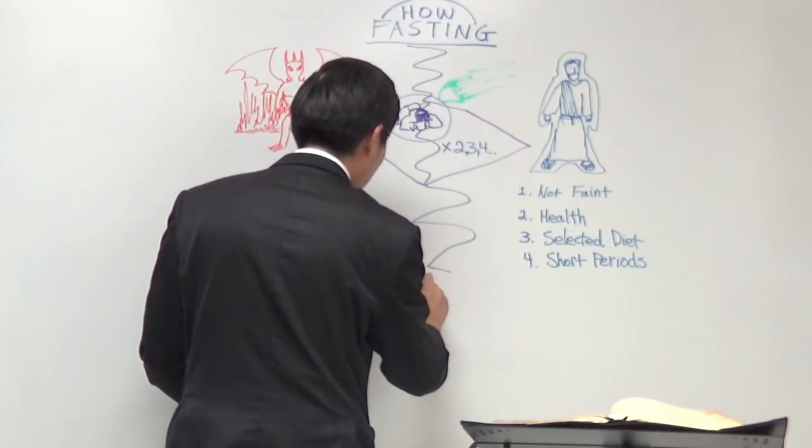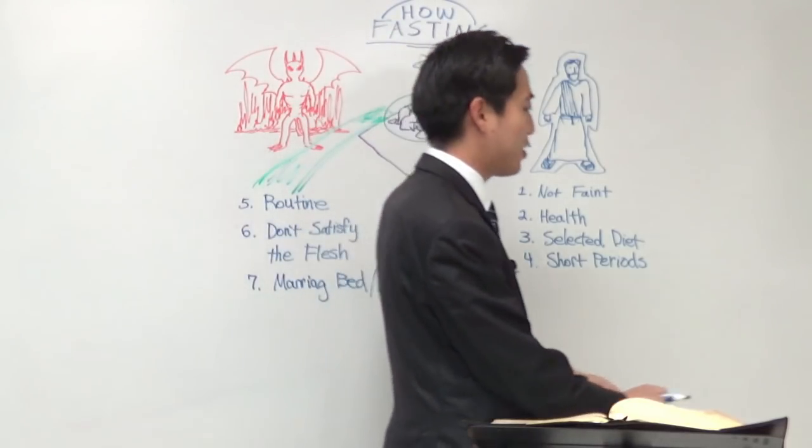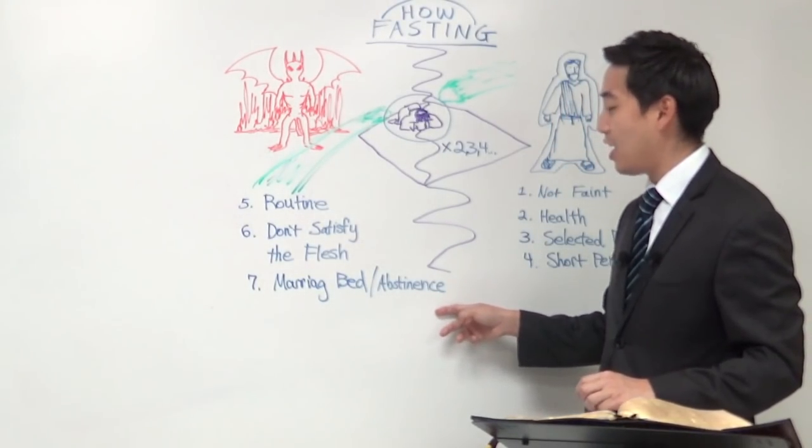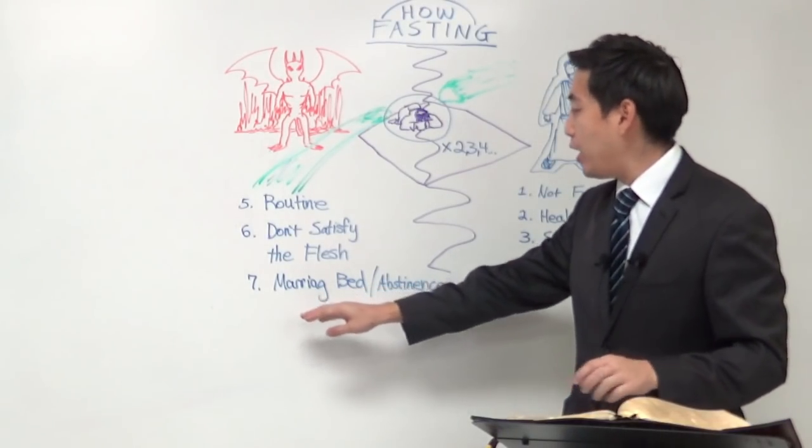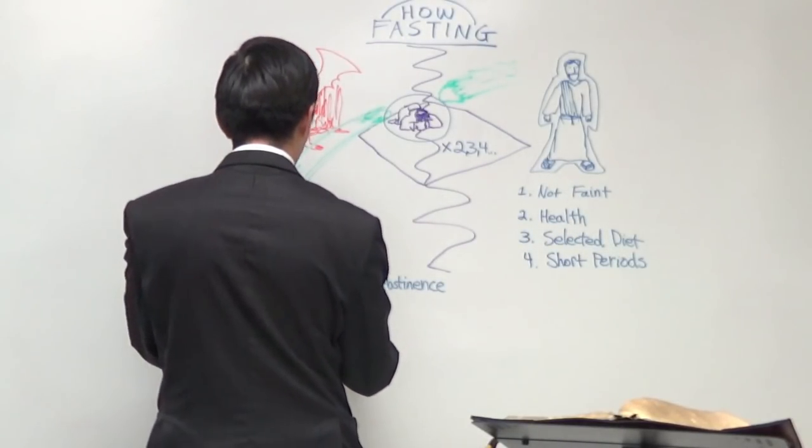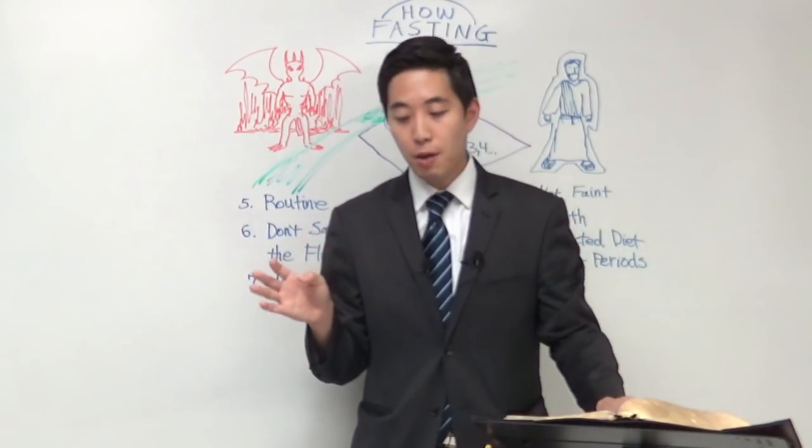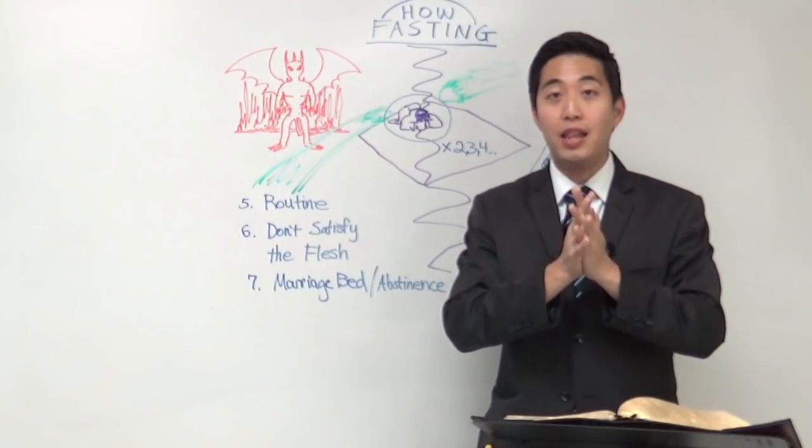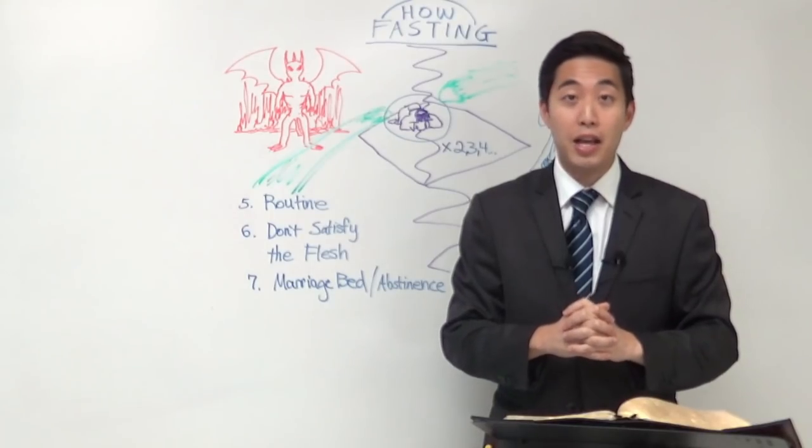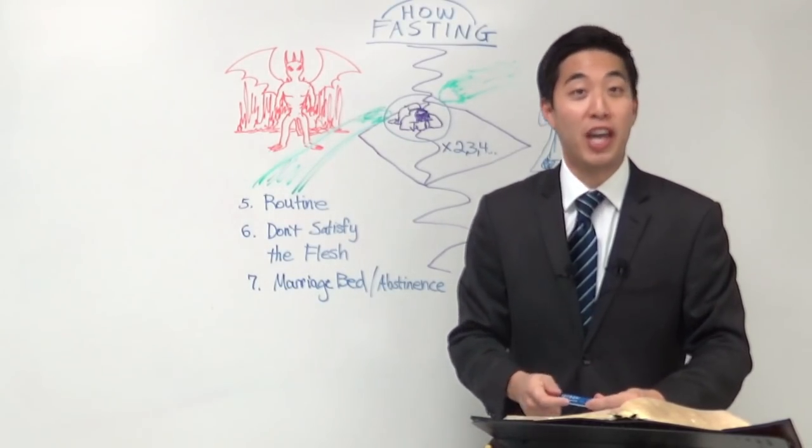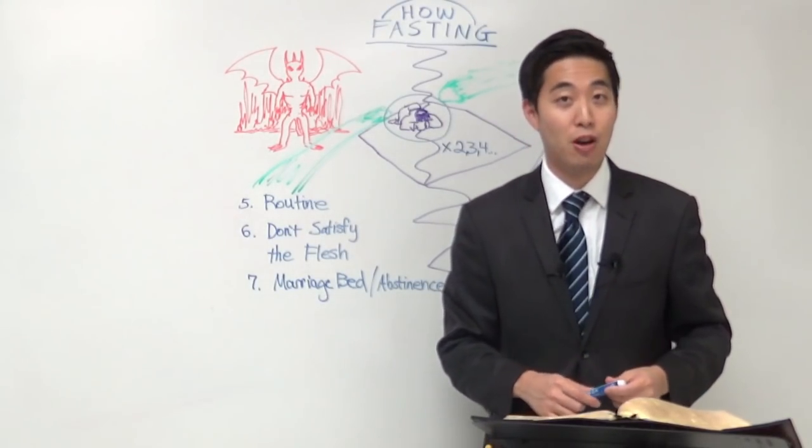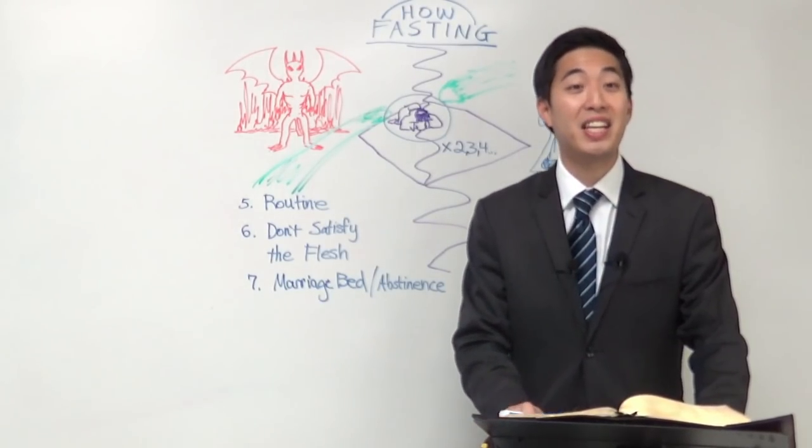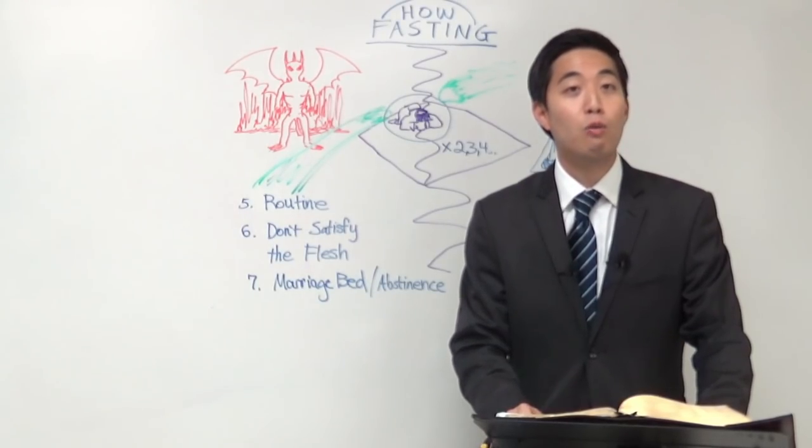The Bible says, defraud ye not one the other, except it be with consent for a time. That ye may give yourselves to fasting and prayer, and come together again that Satan tempt you not for your incontinency. So this is speaking of context. 1 Corinthians chapter 7 and verse 4 through 5 says that actually a man and a wife, they should have relationship with each other. Don't defraud the marriage bed from each other. So you should be together. However, when it comes to fasting and prayer, God says that's the exception. You get away from that. In fasting and prayer, you get away from that. So basically, the marriage bed. Abstain. Abstinence.